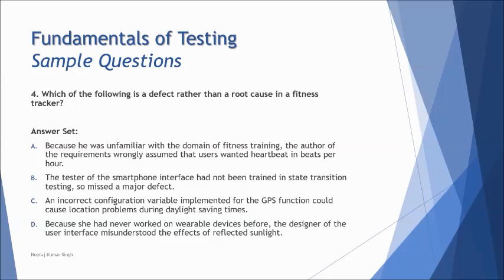Now if you see, these options might look a little tricky to you, that how to differentiate a defect from the root cause. But if you see here, I've got a clear function here: an incorrect configuration variable implemented for GPS function could cause location problems during daylight saving times. Now that is one of the defects. But if you see all other things, we have conducted analysis and we have found that why is it happening. So if you say A, B, D here, A, B, D would help you to understand a scenario that we have already figured out that why was the defect happening, like what was the root cause of it. And exactly these are the root cause. But C does not tell you that it is a root cause, it only tells you that it is a problem.